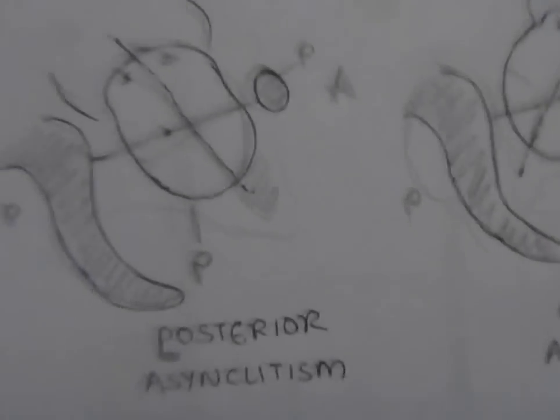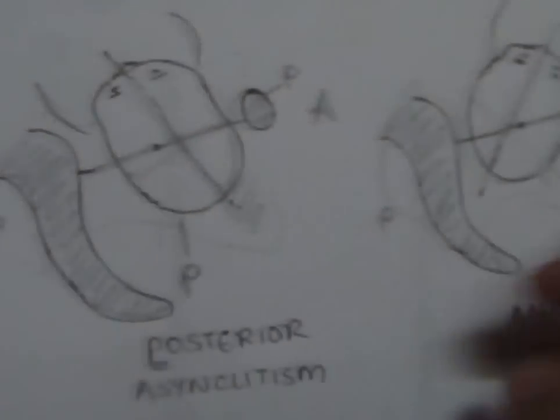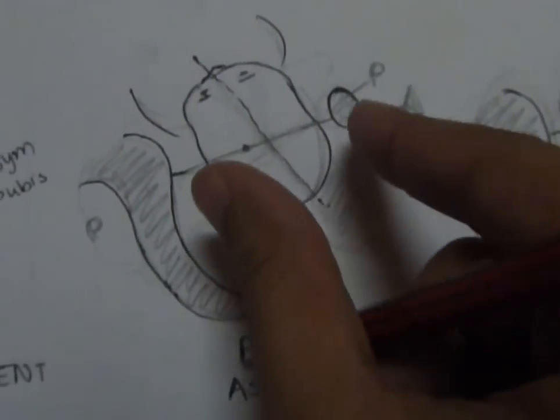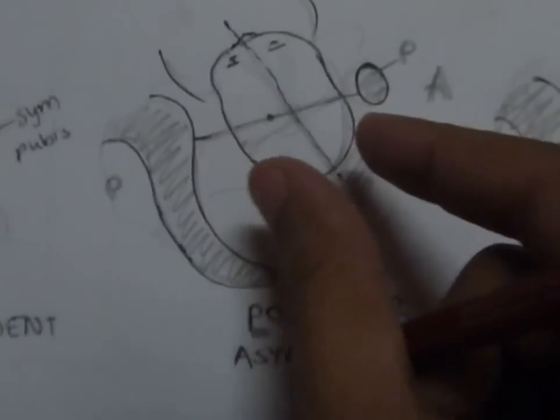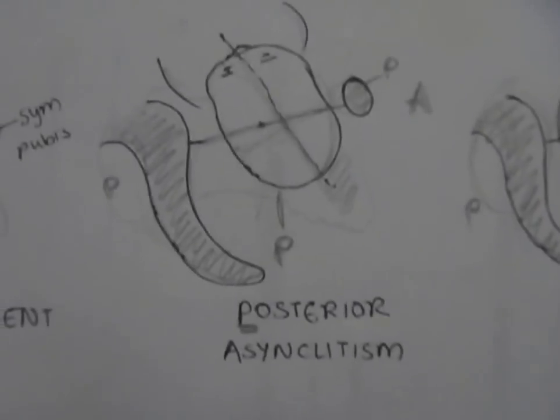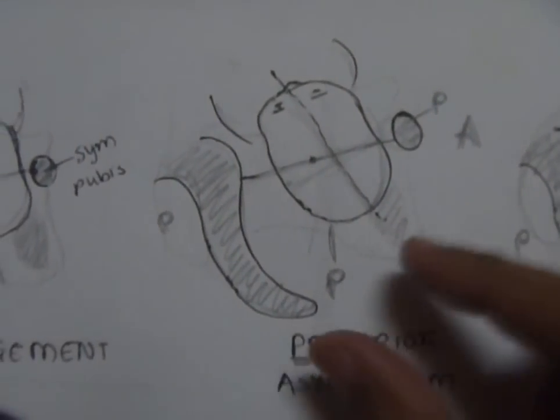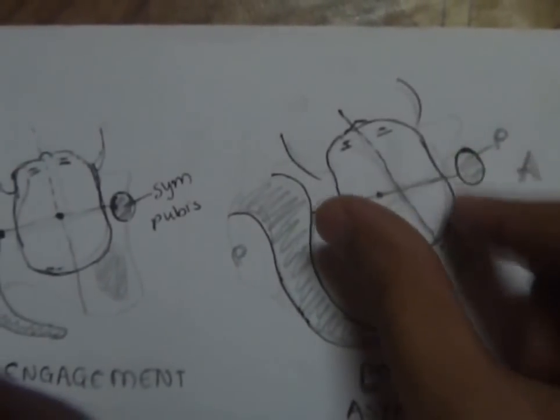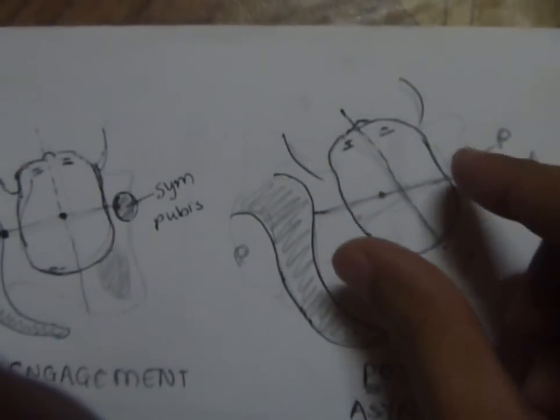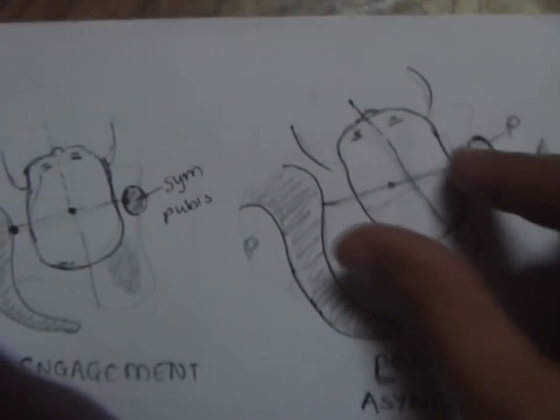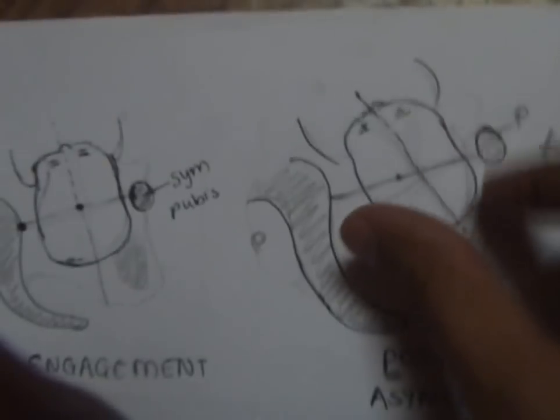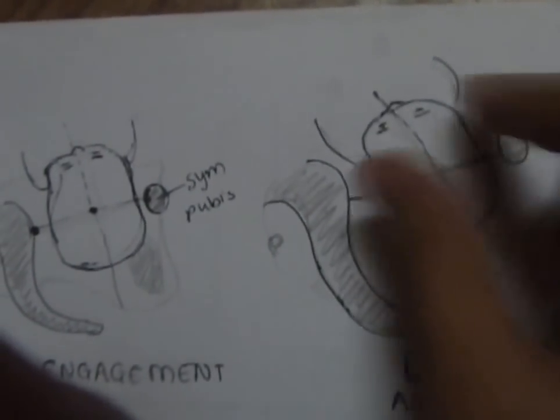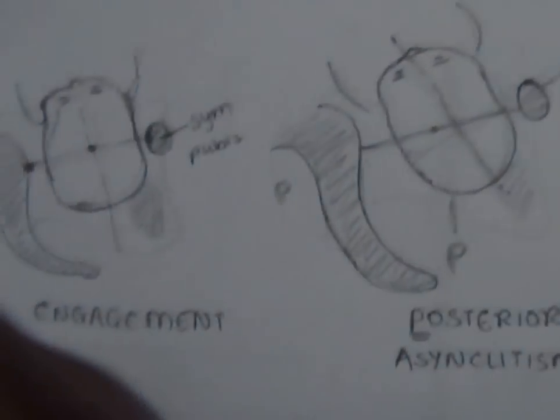How during engagement and descent of the head there can be a posterior and a lateral flexion of the head in case of a posterior asynclitism, so that the head comes to glide on the anterior parietal bone. It is like the anterior parietal bone will glide past the pubis symphysis and it will come into synclitism like earlier shown.